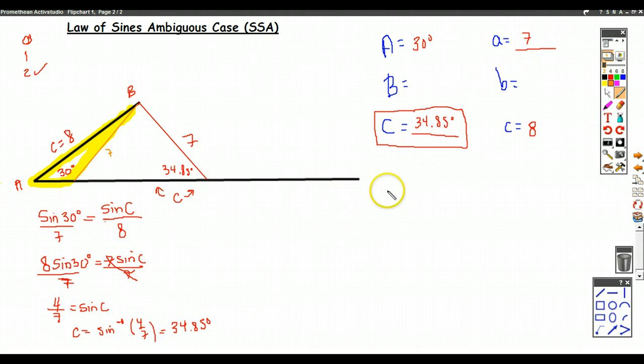But it's a new triangle, so we have to duplicate the setup that we started with which was that this is 30 degrees, that this is 7, and that this is 8. However, angle C now is not 34.85 degrees. It's whatever this angle is here.